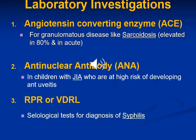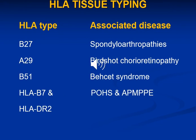Laboratory investigations can help in the diagnosis, including angiotensin-converting enzyme assay to exclude sarcoidosis, ANA to exclude juvenile idiopathic arthritis, and RPR or VDRL to exclude syphilis. HLA typing can also help in the diagnosis of uveitis; for example, HLA-B51 can be associated with Behçet's syndrome, and there are many other HLA associations.